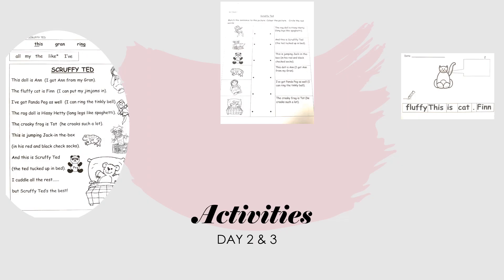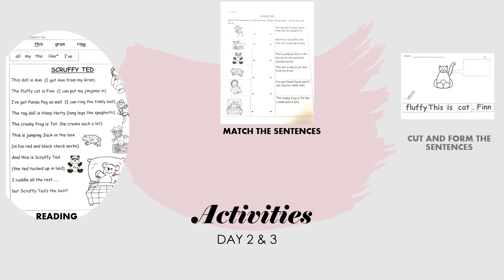Now you can start doing your activities. First you can do the reading, and then you can match the sentences with the pictures. Don't forget to circle the red words and also color the picture. You can cut and form the sentences. Don't forget: capital letter, finger spacing, full stop, and on the line.